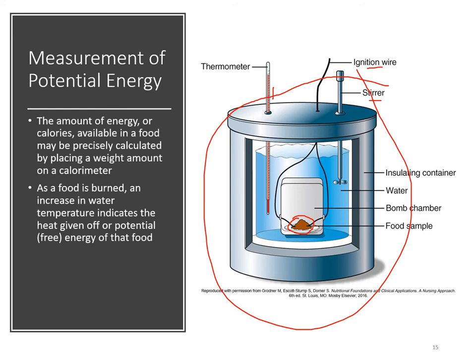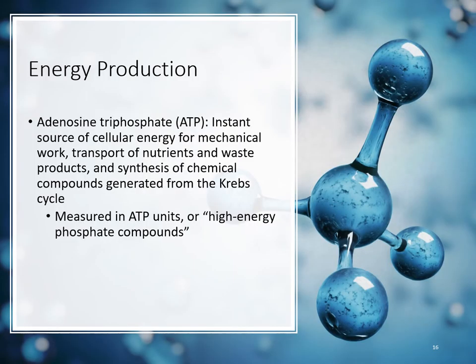ATP — adenosine triphosphate — is the product of the TCA/Krebs cycle. It is the instant source of cellular energy for mechanical work, transport of nutrients and waste products, and synthesis of chemical compounds. ATP molecules are also called high-energy phosphate compounds; they are the currency the body uses for energy. Because we can use ATP without oxygen, this is considered anaerobic. The body maintains an ATP supply because energy demands can arise at any moment.